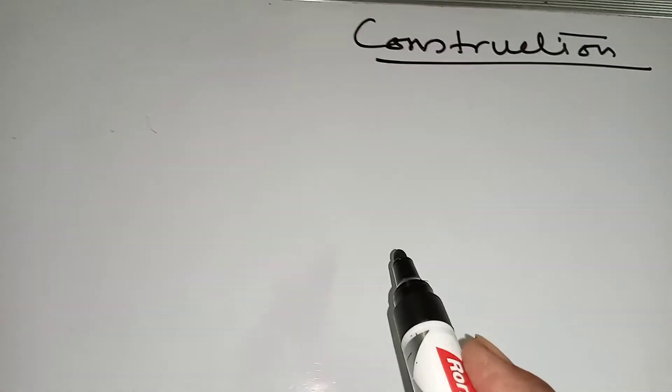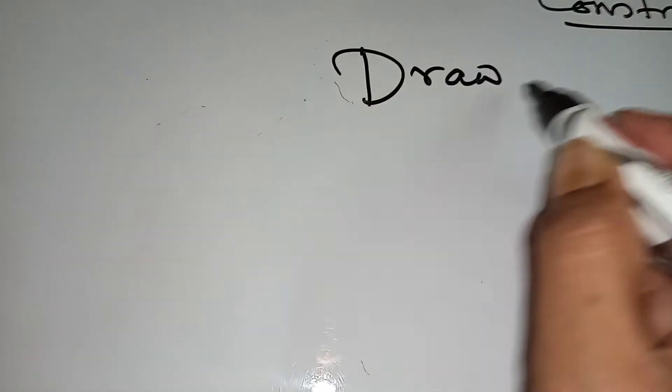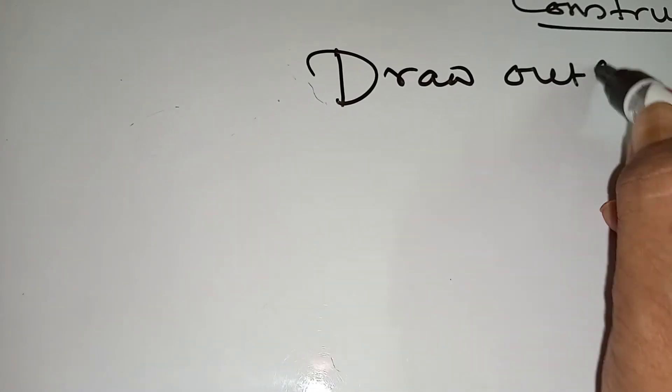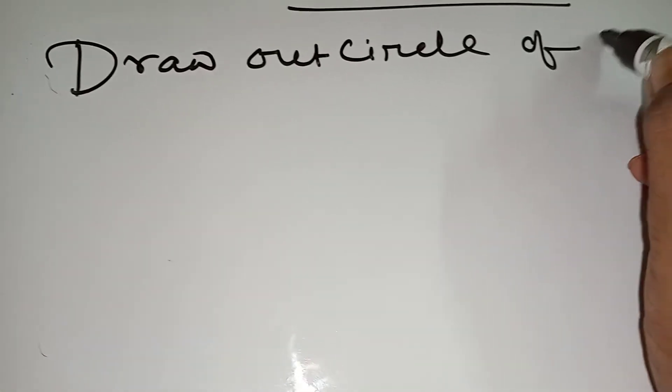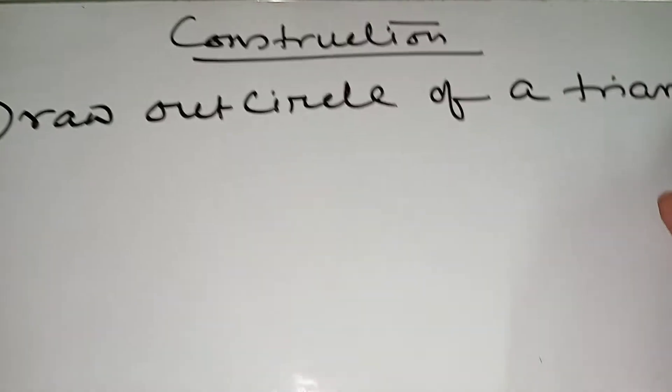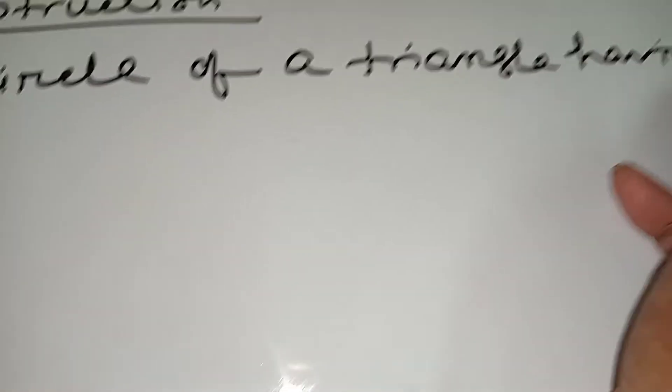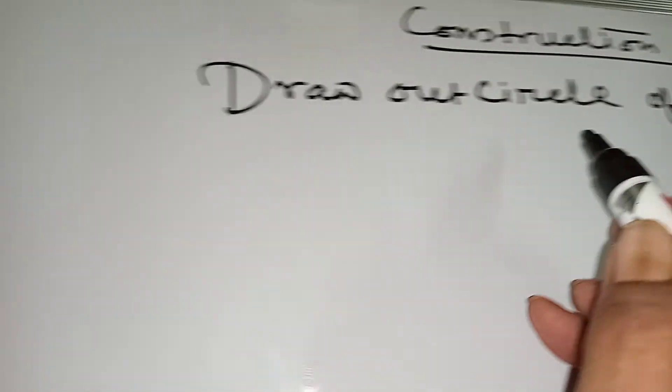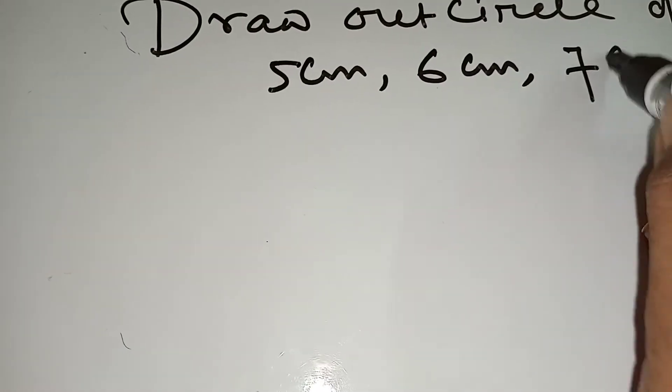Construction of the circumcircle of a triangle having five centimeters, six centimeters, and seven centimeters.